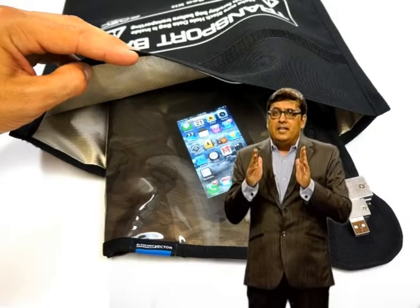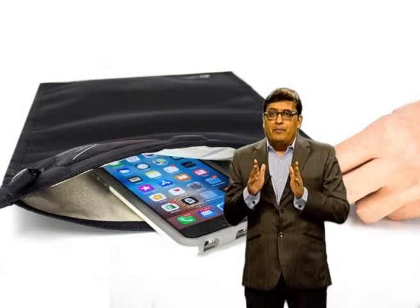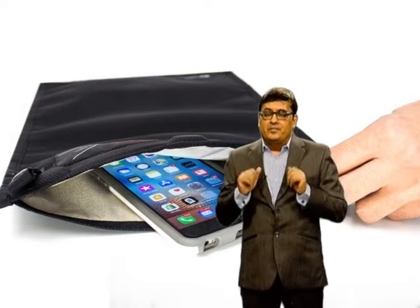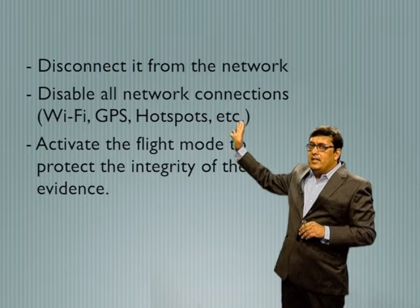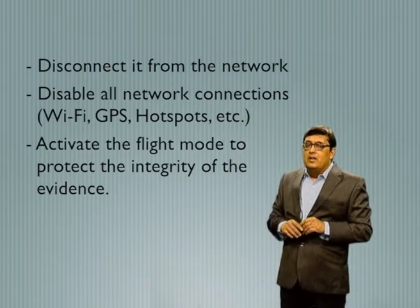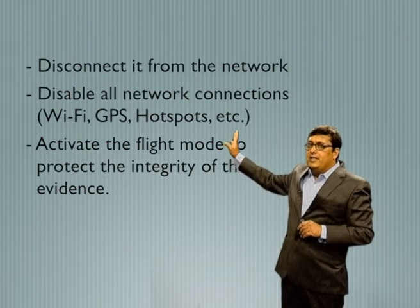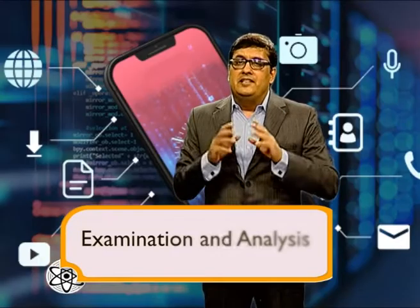Mobile devices are often seized while switched on, and since the purpose of their confiscation is to preserve evidence, the best way to transport them is to attempt to keep them turned on to avoid a shutdown which can alter files. A Faraday bag and external power supply are common types of equipment for conducting mobile forensics. Before putting the phone in the Faraday bag, disconnect it from the network, disable all network communications — for example, Wi-Fi, GPS, hotspots — and activate flight mode to protect the integrity of the evidence.